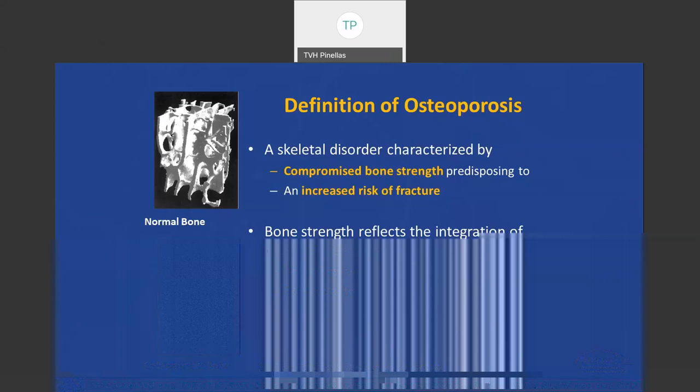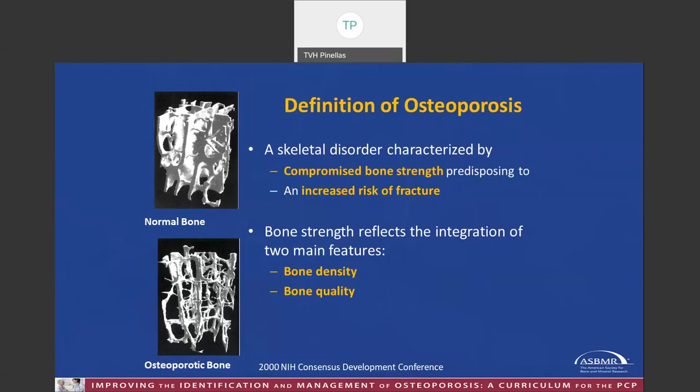Osteoporosis is defined as a skeletal disorder characterized by the loss of bone strength resulting in an increased risk of fracture. The determinations of bone strength include bone density and bone quality. A bone density study only assesses bone density; we cannot easily measure bone quality without bone biopsy or other research techniques. The top picture demonstrates normal bone, and the lower picture demonstrates loss of connective cross pieces and thinning of the internal structure of the bone, putting it at increased risk of fracture.